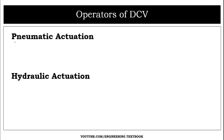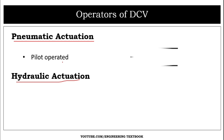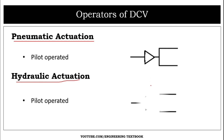The last two methods are pneumatic actuation and hydraulic actuation. Both are pilot operated, but the difference is that pneumatic actuation uses an empty triangle symbol, while hydraulic actuation uses a filled triangle. The symbol is the same; the only difference is whether it is filled or empty. These were the symbols and operations of the DCV.